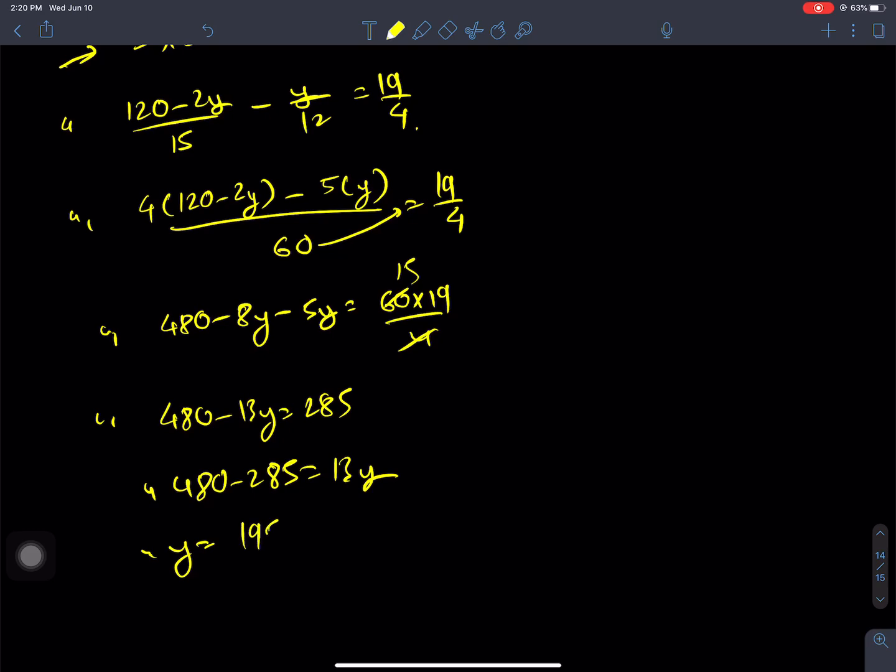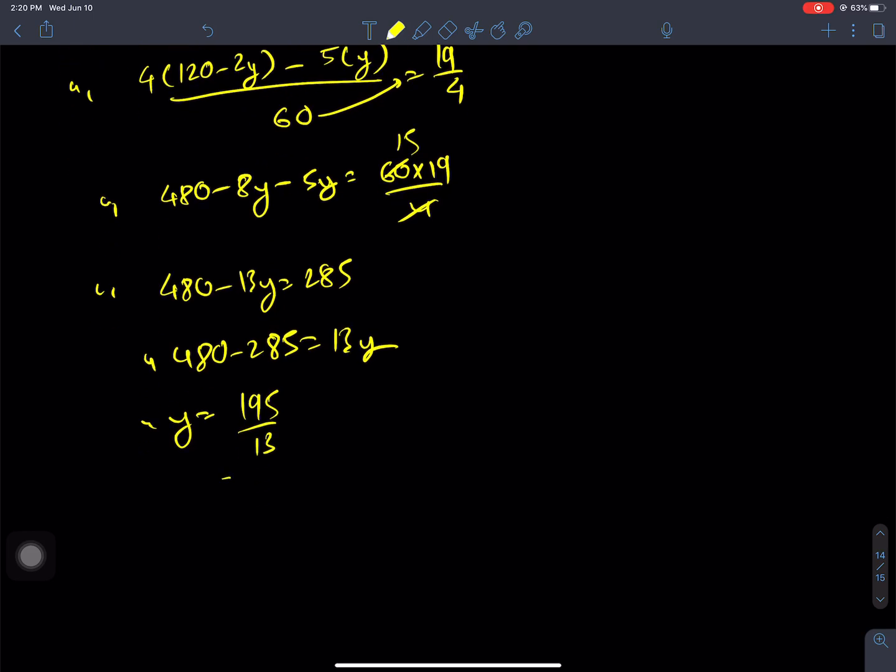Therefore 480 - 285 = 68y, so 195 = 68y. Wait, this should be 13y. So y = 195/13 = 15.